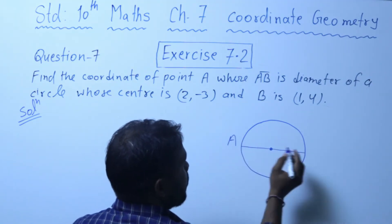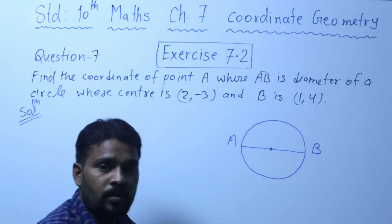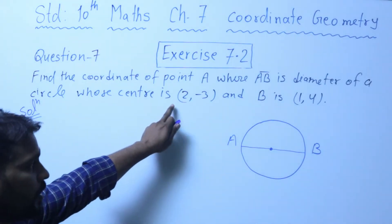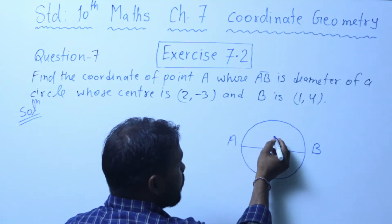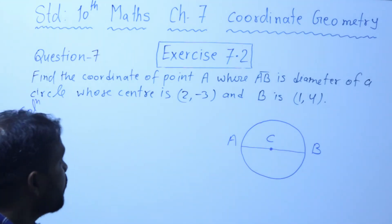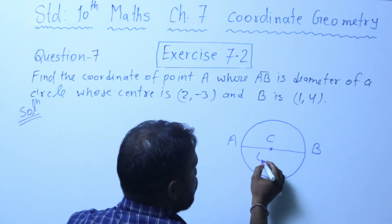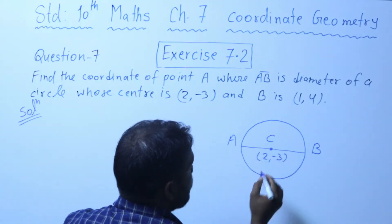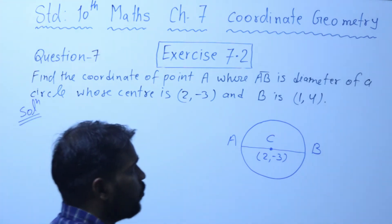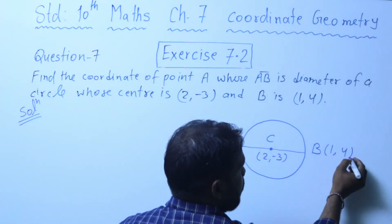Suppose this is point A and this is point B. Now you're told that the center, which we denote as C, has coordinate given as (2, -3), and coordinate of B is (1, 4).